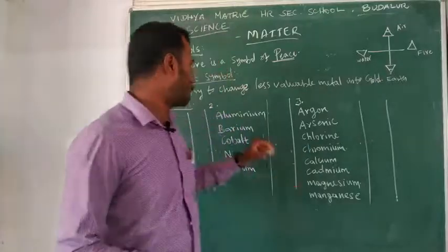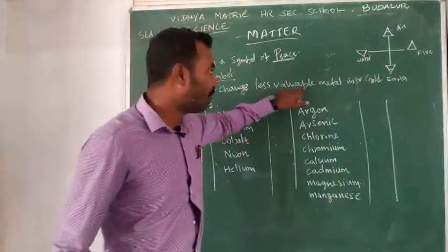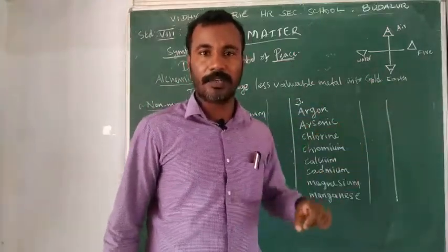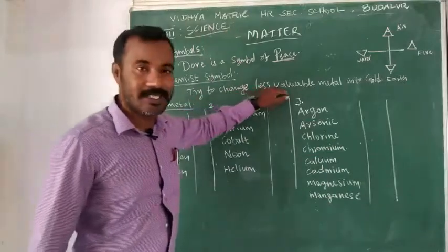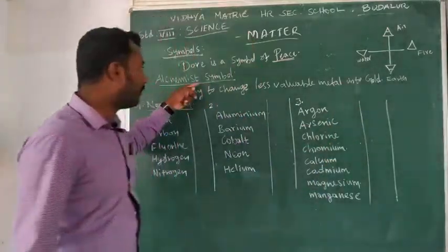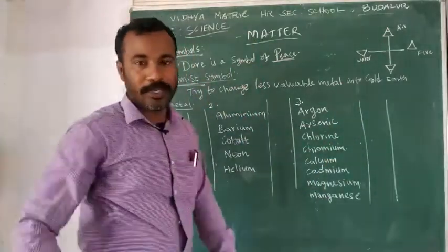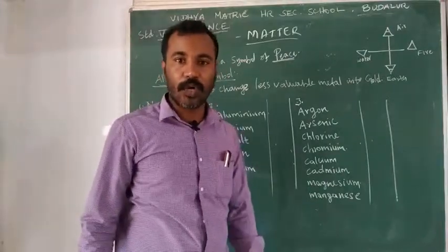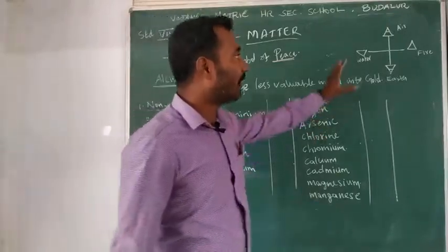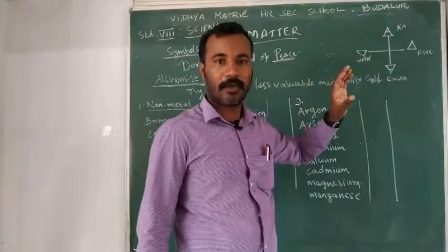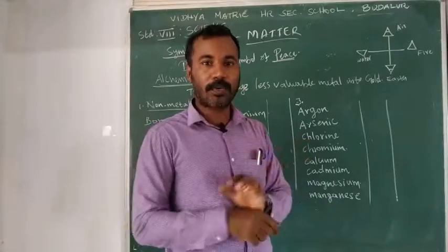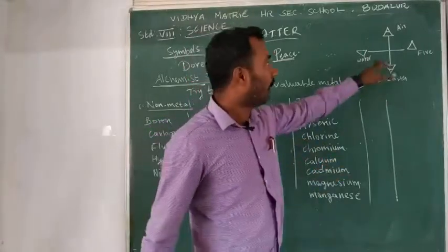Alchemists tried to change less valuable metal into gold. Gold is valuable, so they tried to change less valuable metals into gold. They are called alchemists. Define alchemists — what do you mean by alchemists?